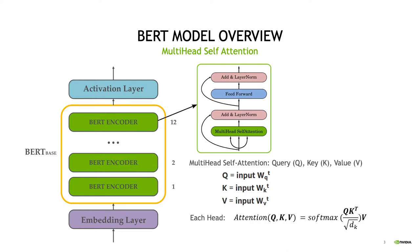Let me start giving an overview of the BERT model. On the left you can see the architecture of BERT. After tokenization we have an embedding layer, followed by a stack of encoders. In the case of BERT base we have 12 encoders, and at the end of the model we have an activation layer which depends on the specific task that the user wants to perform. This is typically a softmax or a dense layer. 95% of the computational time in inference is spent on the encoder, so we will focus on these layers.